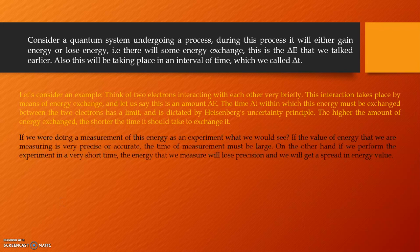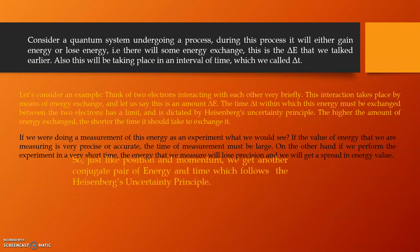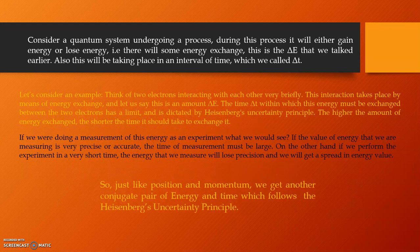Thinking from another point of view, if we were doing a measurement of this energy as an experiment, what we would see? If the value of energy that we are measuring is very precise or accurate, the time of measurement must be large. On the other hand, if we perform the experiment in a very short time, the energy that we measure will lose precision and we will get a spread in energy value. So, just like position and momentum, we get another conjugate pair of energy and time which follows the Heisenberg's uncertainty principle.